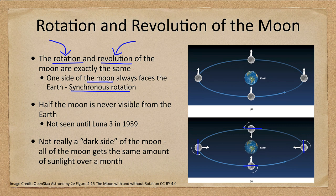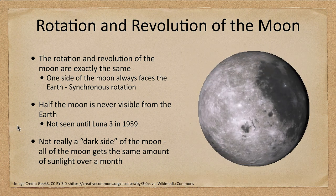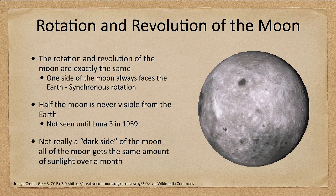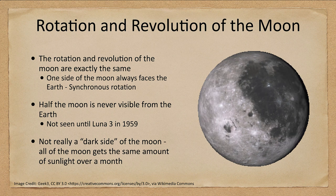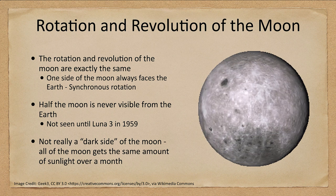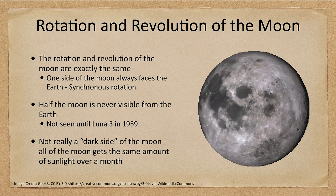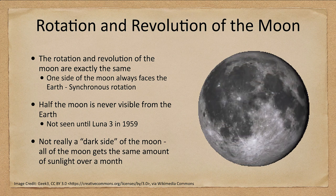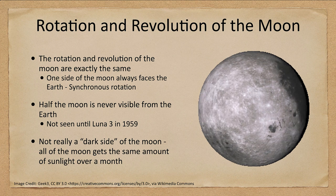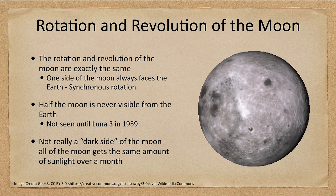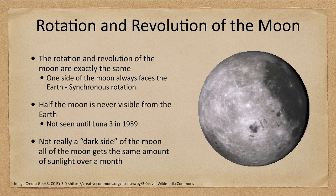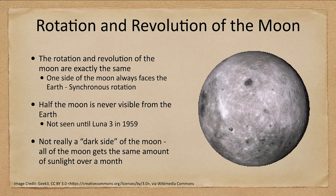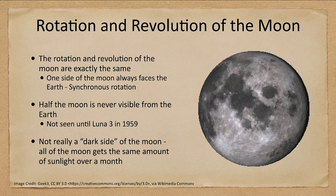Let's look at an animation of the moon's rotation. We start with the side we're used to seeing, and then we'll see the other side — what we call the far side of the moon. It's not really a dark side; sometimes it's dark, sometimes it's light, depending on the specific timing of the month, and each side gets the same amount of sunlight over the course of a month. This other side was not visible until 1959, when the Luna 3 spacecraft flew around the moon and got our first images.